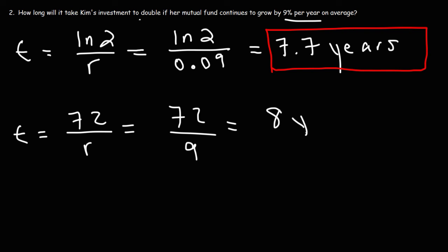72 divided by 9 is 8 years. So in approximately 8 years, her investment will double. And you can see 7.7 can be rounded to 8. So it's a good approximation. So that's basically it for this video. So now you know how to solve problems associated with interest compounded continuously.